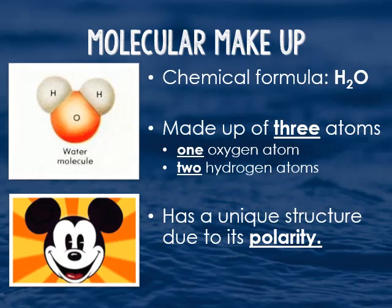Let's look at the molecular makeup of water. The chemical formula for water is H2O. This diagram of a water molecule looks a lot like Mickey Mouse. Water is made up of three atoms: one oxygen, which is the large circle, and two hydrogens up here — that would be Mickey's ears. What I need you to do right now is draw a water molecule in the box in your notes. Make it look like Mickey, or you can simply represent it with lines.